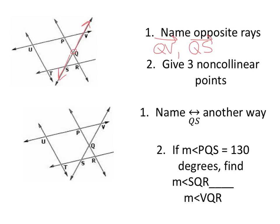And number two. Give three non-colinear points. So any three points that don't lie on the same line. So separate your points with commas. P-U-T.